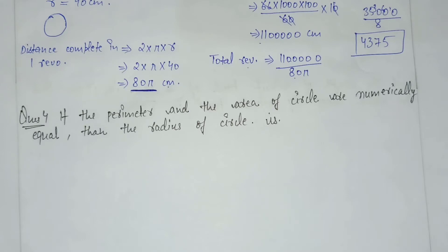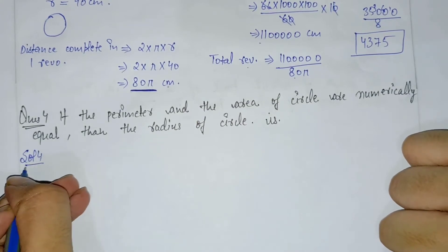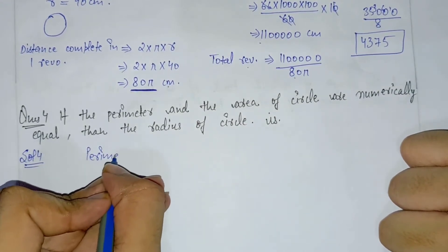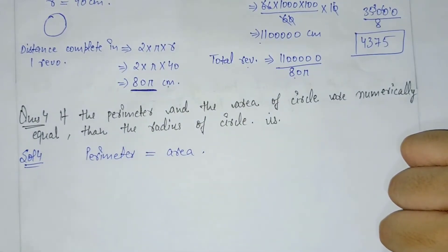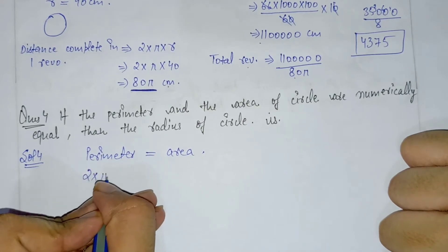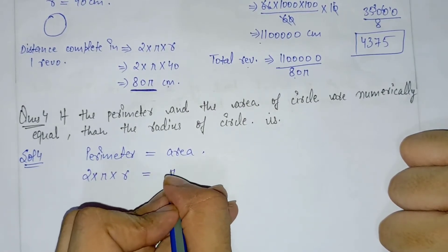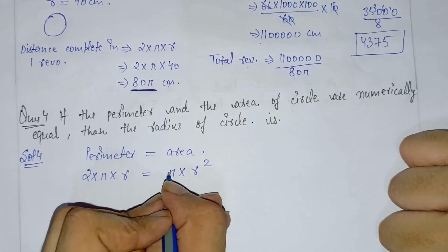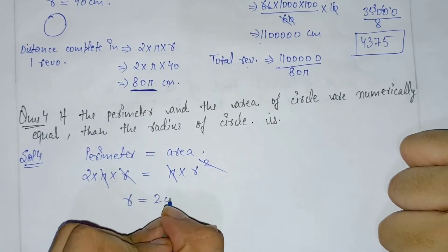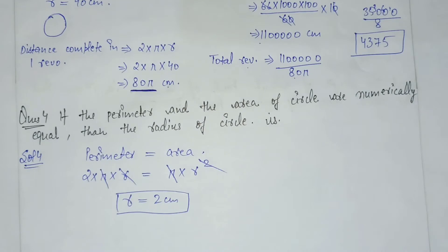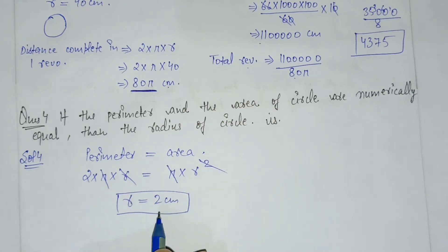Converting units between centimeters, meters, and kilometers as needed to complete the calculation for the total number of revolutions.